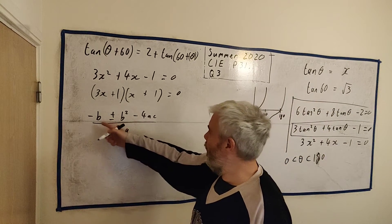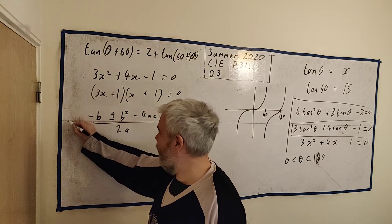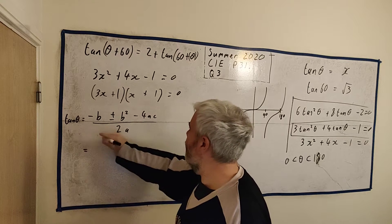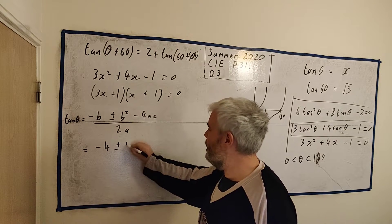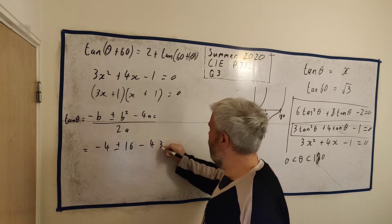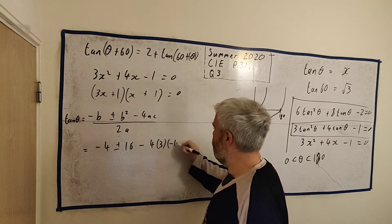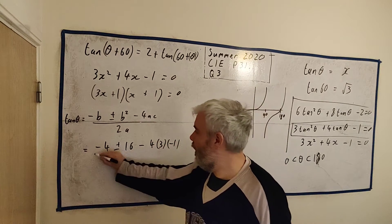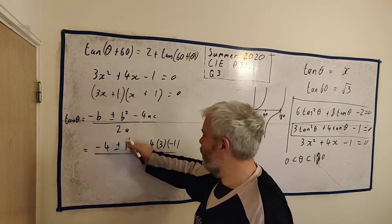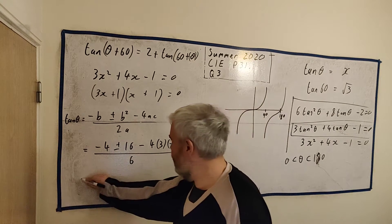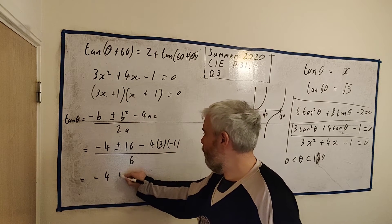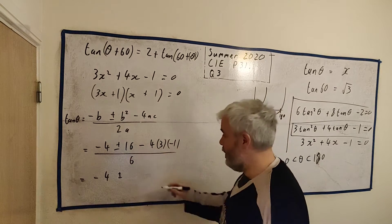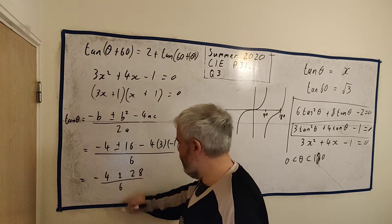Let's do this equation out. If I find the answer for tan θ, we will get -4 ± √(16 - 4·3·(-1)). I always do this one slowly because otherwise you end up losing a minus or something simple. Divided by 2·3, which is 6. And we clean this up. We get -4 ± √28 over 6.